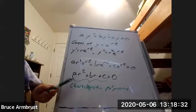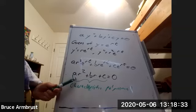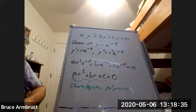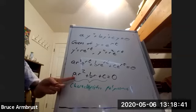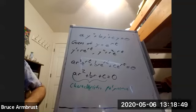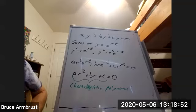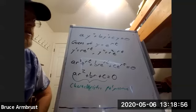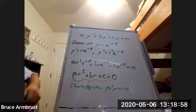When we solve this characteristic polynomial, one of three things can happen with quadratics: we either get two real solutions, two complex solutions, or just one repeated solution. There are those three different cases, so let's talk about each and what that means for our solution set.